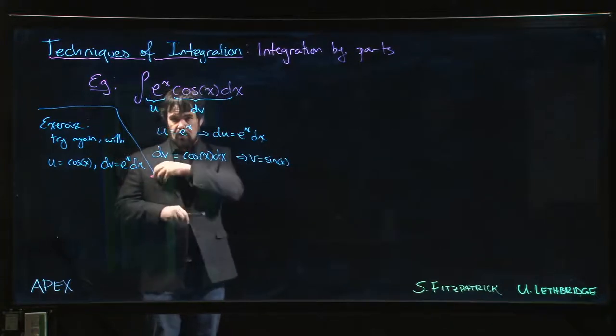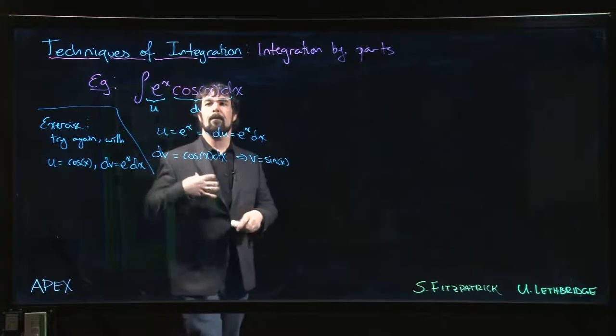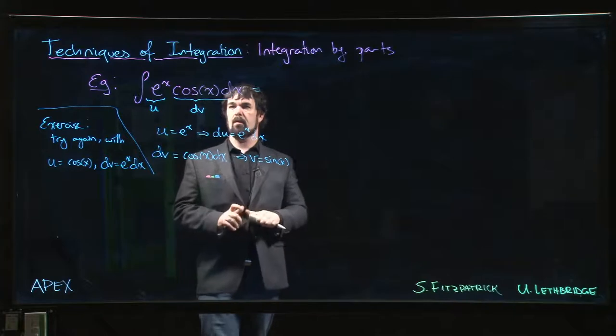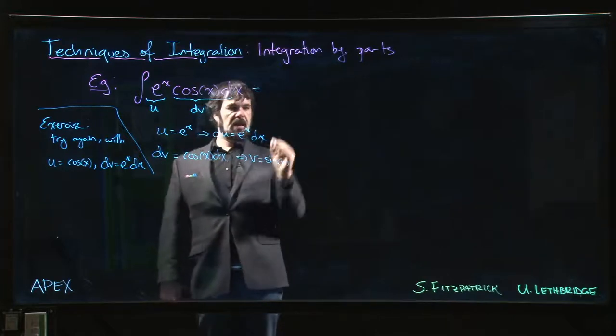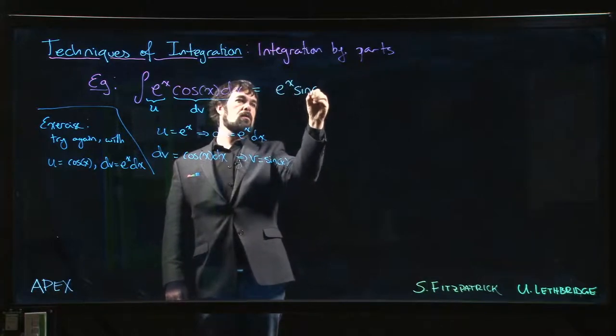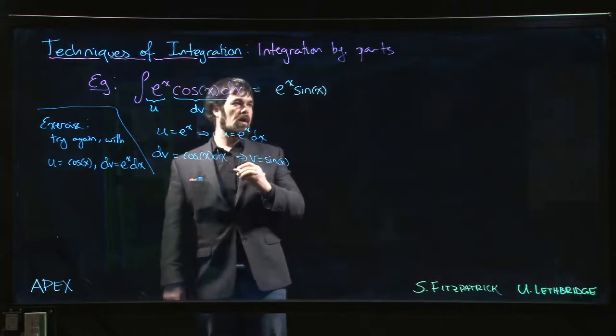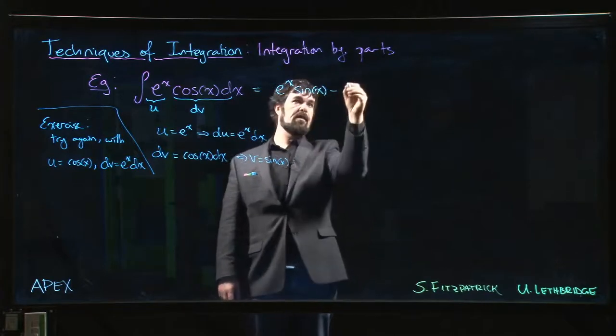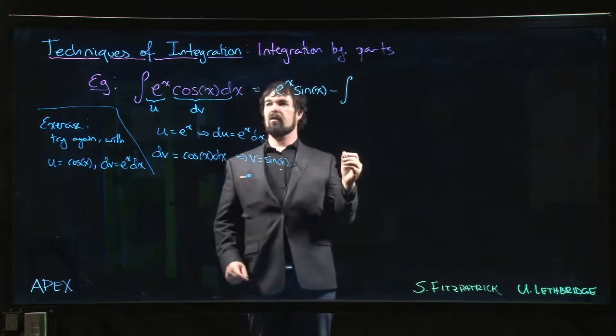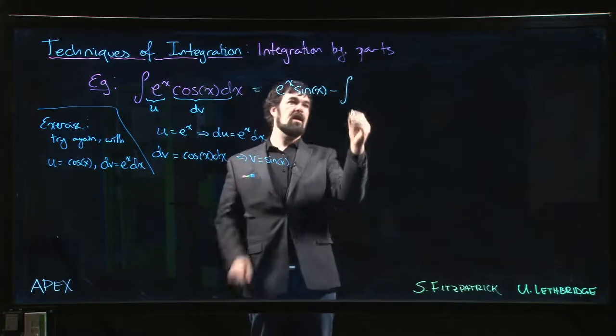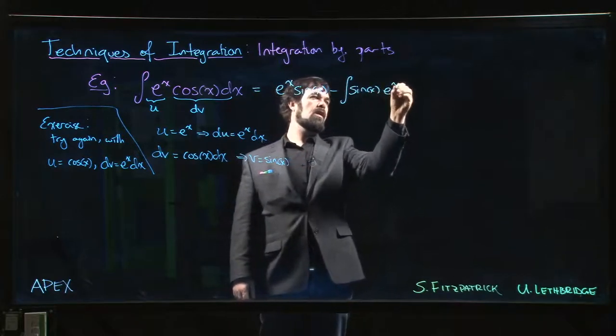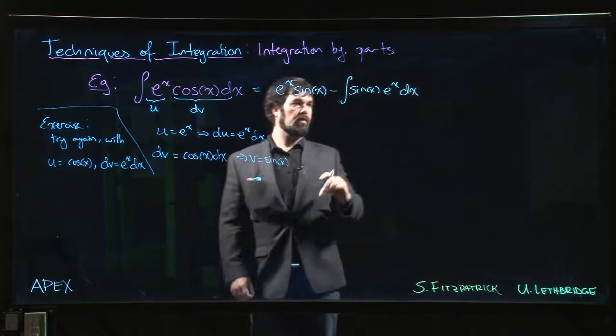Alright. So let's put that to use and see where we go. What are we going to get? So the first term we get is uv. So we get e to the x sin x. And then minus integral of v du. So v is sin x, du is e to the x cos x. So we have sin x e to the x dx. Okay?